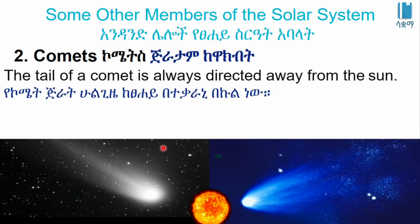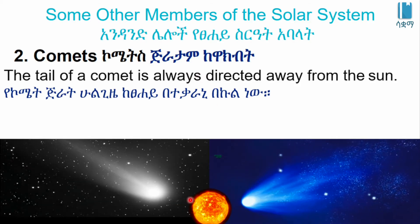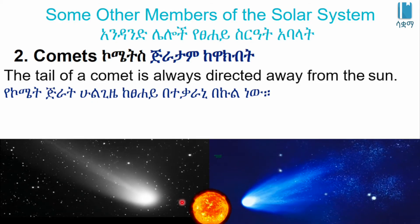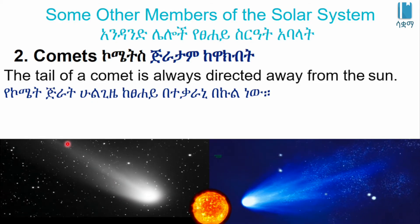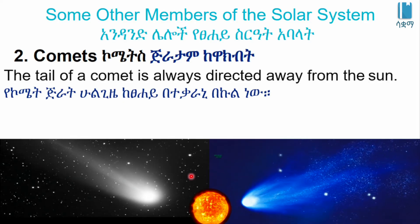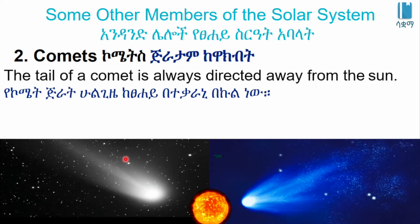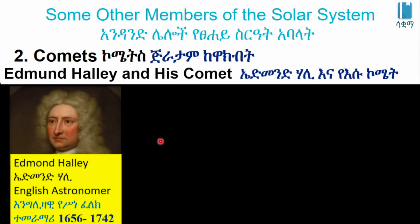The tail of a comet is always directed away from the sun.